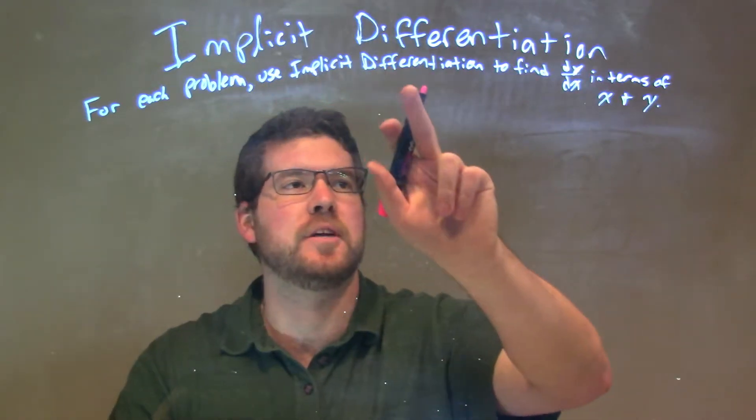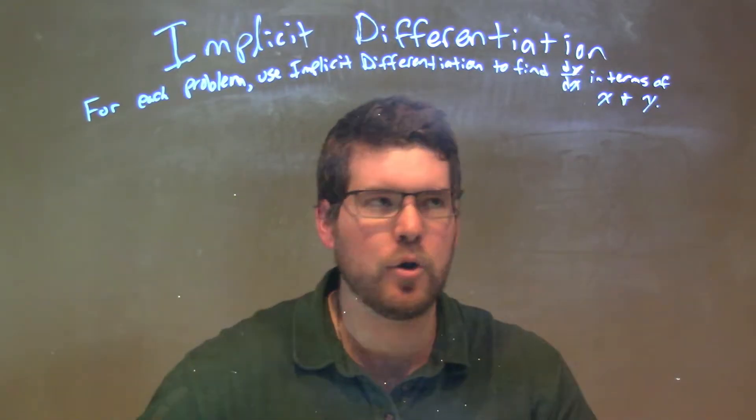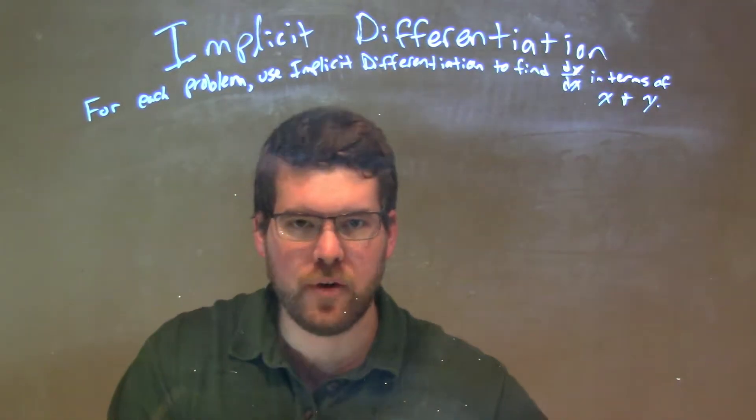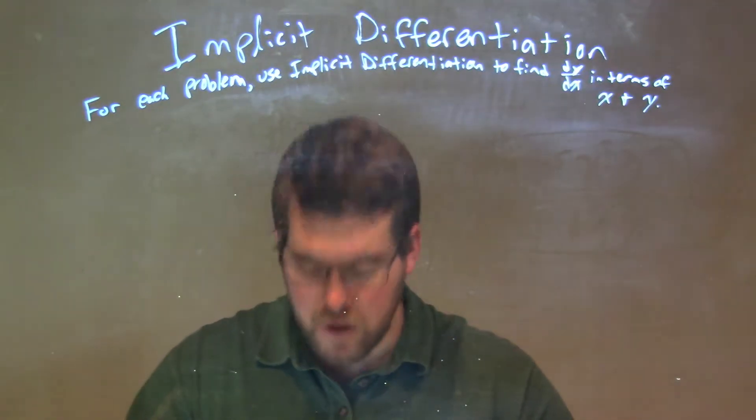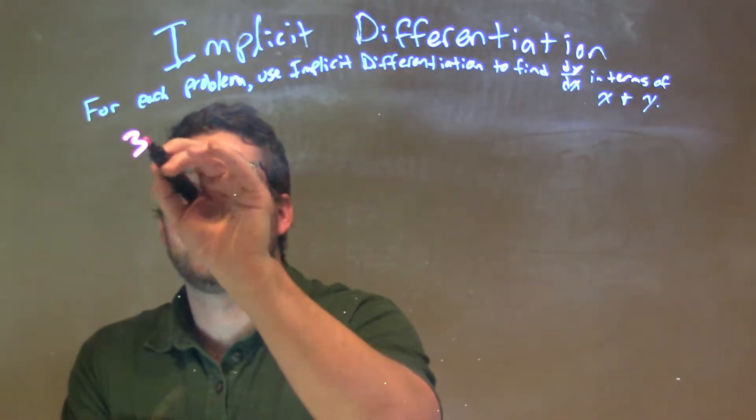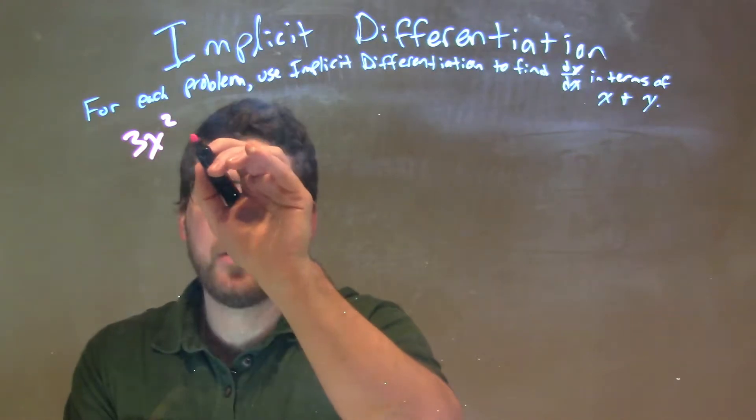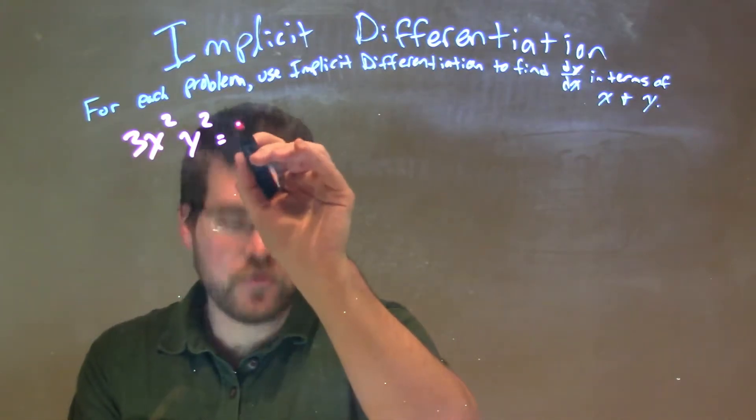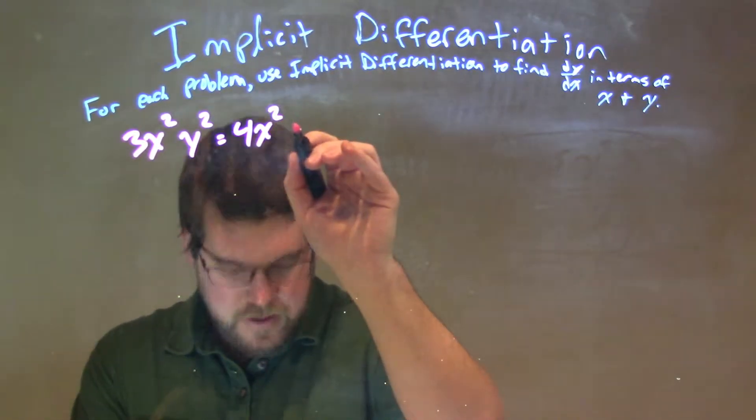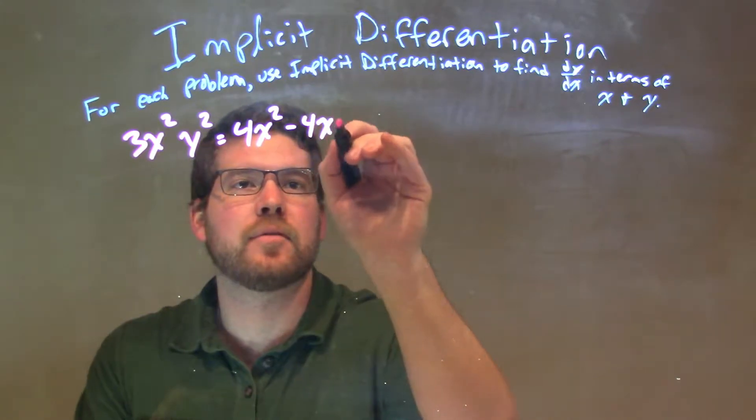And for each problem, we're going to use implicit differentiation to find dy/dx in terms of x and y. So if I was given this problem: 3x²y² = 4x² - 4xy.